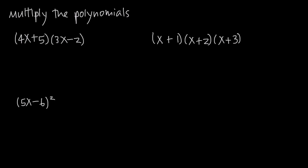In this video, we're talking about multiplication of polynomials. Remember that polynomials means many numbers because poly means many and nomials means numbers. So we just have a bunch of numbers and letters strung together with addition and subtraction signs. We might have some exponents thrown in as well. So we're going to do a couple examples where we multiply polynomials together.